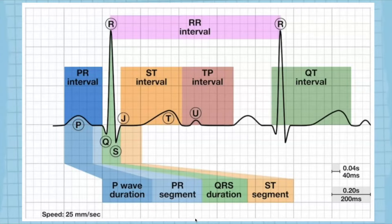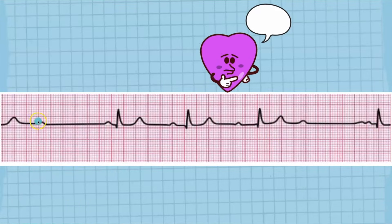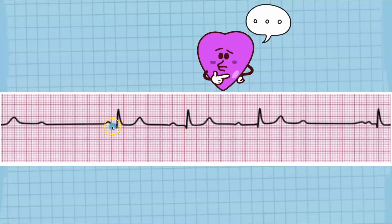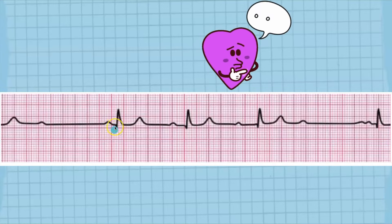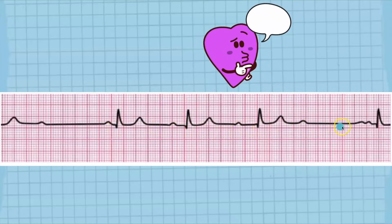This is going to be a super quick review because most people watching this just want to know the answers for their ACLS test. Basically, the PR interval is measured from the P wave to the start of the QRS complex. The R-to-R interval is usually what you're going to be looking at, especially for today's rhythms. So immediately here I see a P wave but I don't see the QRS complex right away — looking at the PR interval, it looks about average at first.